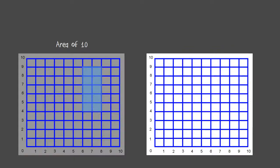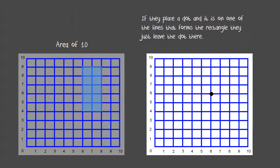The other players will then start guessing at where that shape is on the board by plotting dots on the grid wherever they like. If the dot happens to land on a line that forms the array, the player will just leave that dot there.